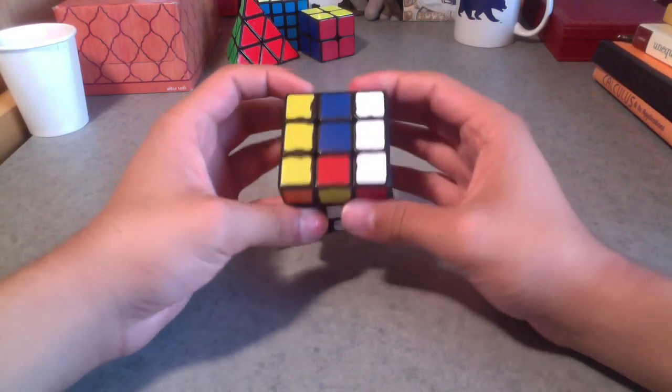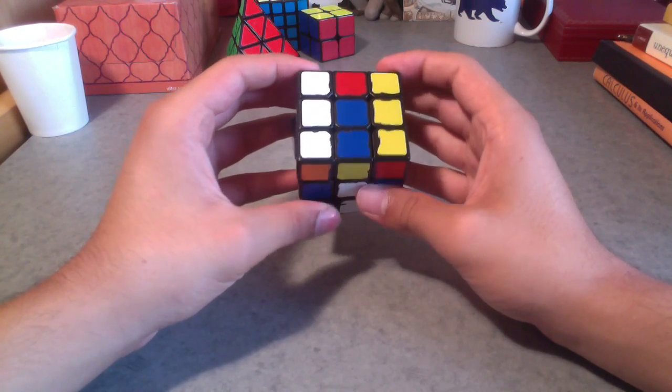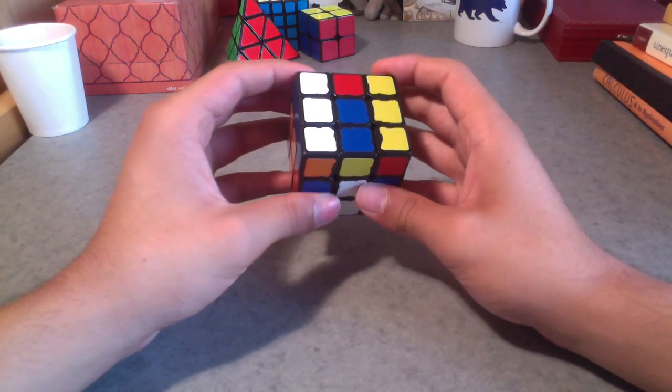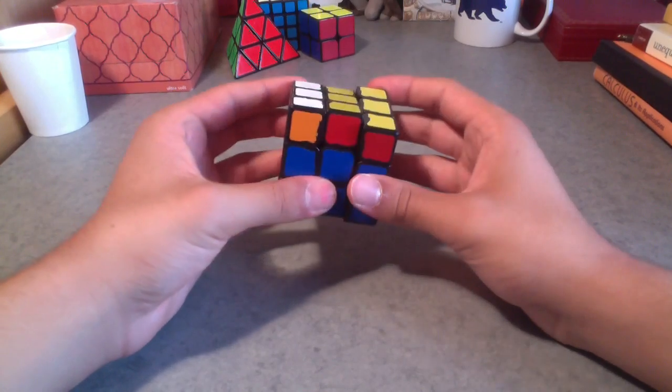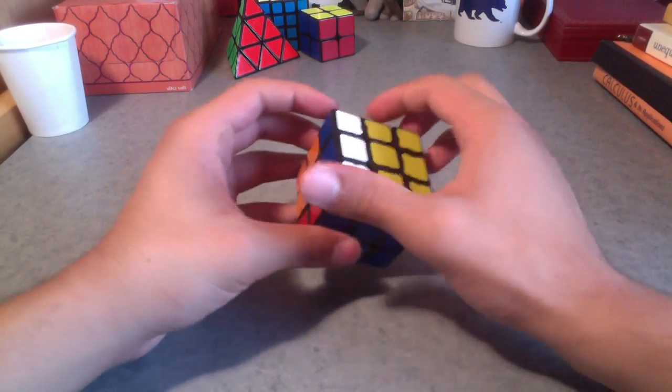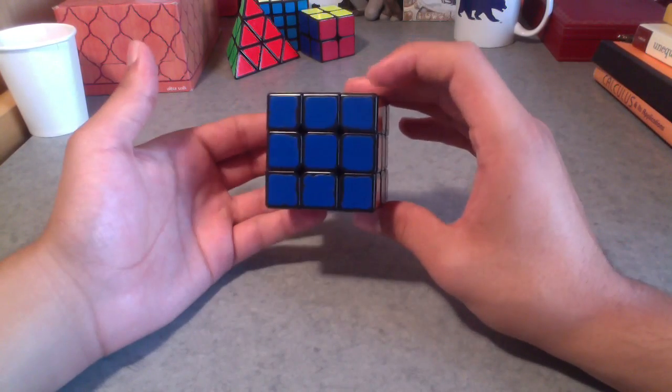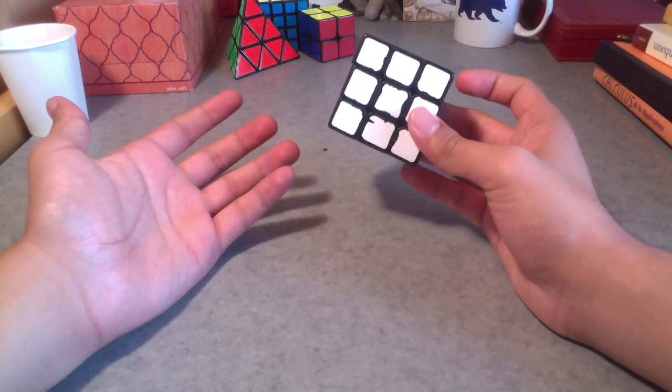You do F2 again. Now you undo dragging them down. You pull them back up. So you do L prime R. And then wherever this white bar is, you just bring it back towards the front. In this case, that would be a U prime. And then you do F2 to undo. And then you're done.